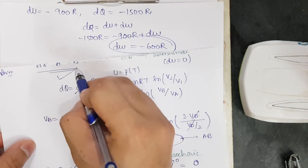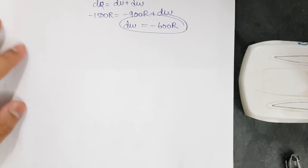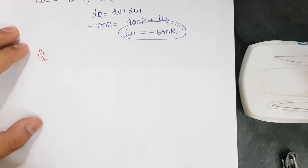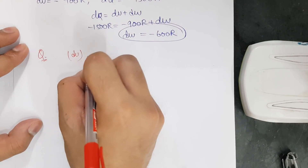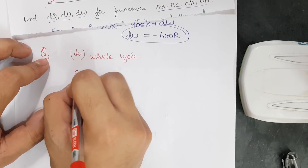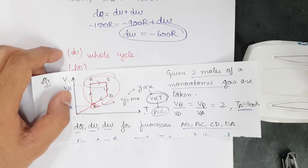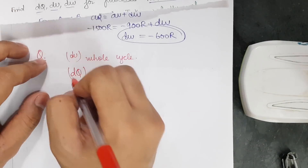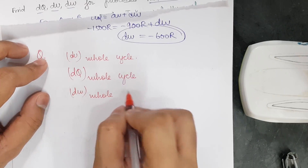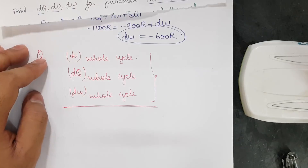So we have solved all four processes: A→B, B→C, C→D, and D→A. The homework for you is to find dU, dQ, and dW for the whole cycle — going from A→B→C→D→A. Finding dQ for the whole cycle is a very important question from a JEE Advanced point of view. Please calculate these values for the complete cyclic process and mention your answers in the comments below.